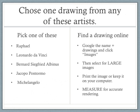How to find drawings: you can choose from any of these artists — Raphael, Leonardo da Vinci, Bernard Siegfried Albinus, Jacopo Pontormo, and Michelangelo. Put the name of the artist and the word 'drawings' into Google, and you will get a tremendous number of websites. From that list, click on 'Images' — you'll see it listed right under the Google search bar. On that page, select large images. The bigger the image you have to work from, the more effective your final drawing will appear. Print the image or keep it on your computer, then measure on your paper for accurate reproduction and rendering. This drawing will be turned in as part of your assignment.